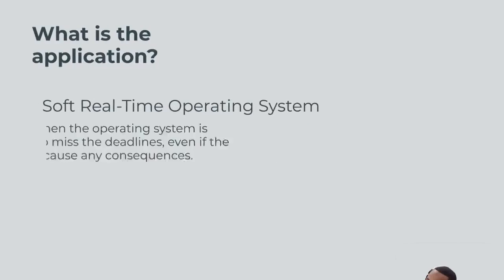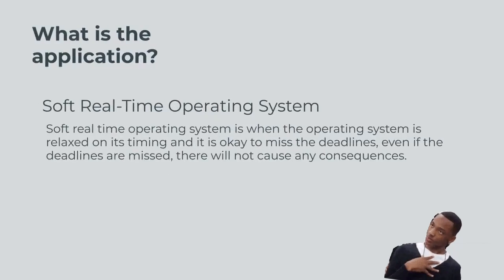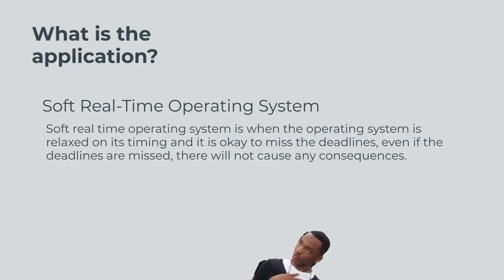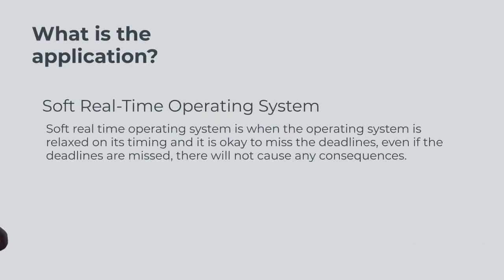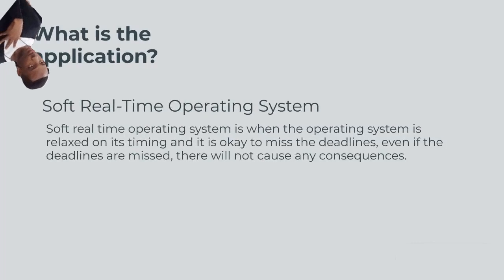A soft real-time operating system is when the operating system is relaxed on its timing and it is okay to miss the deadlines. Even if the deadlines are missed, there will not be any consequences.